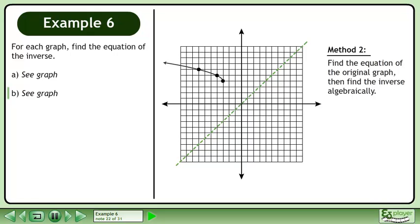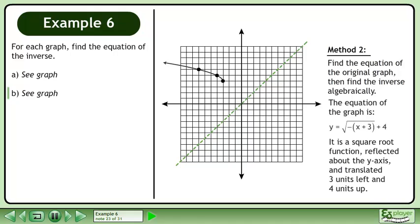Now we'll solve this problem using a different method. Find the equation of the original graph, then find the inverse algebraically. The equation of the graph is y equals the square root of negative the quantity x plus 3 plus 4. It is a square root function reflected about the y-axis and translated 3 units left and 4 units up.